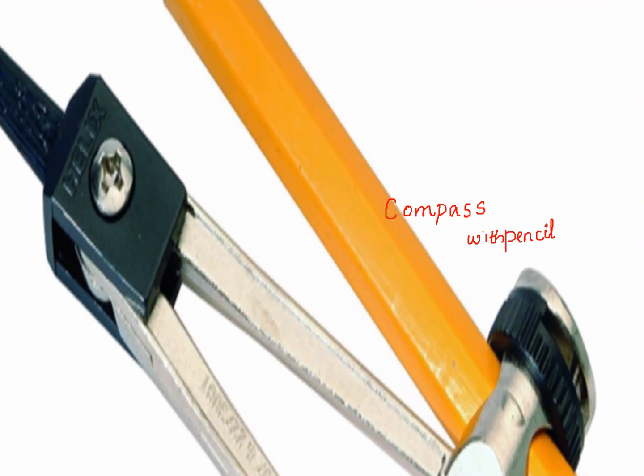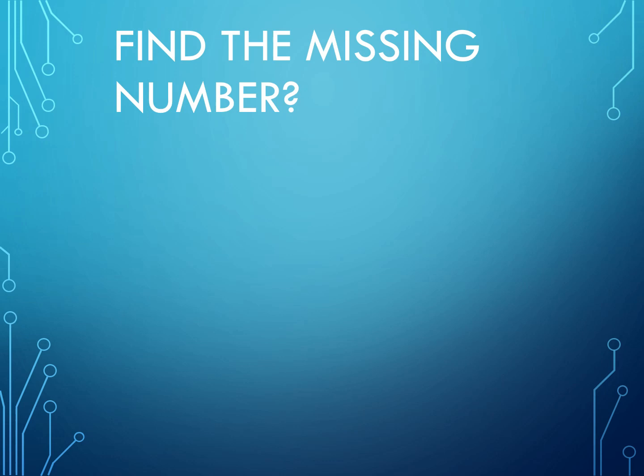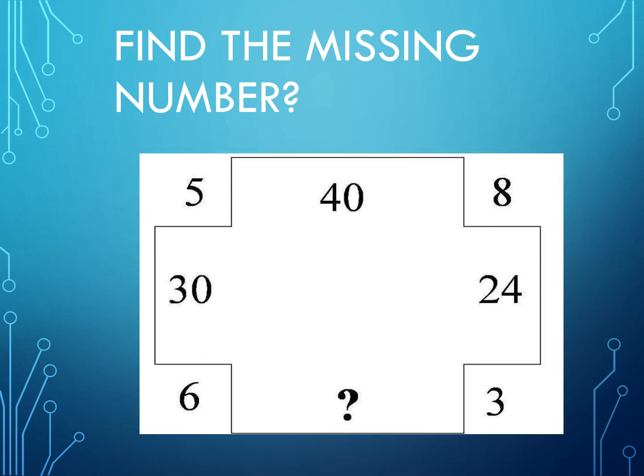Next question: find the missing number. First we will check the given numbers and what is the possibility of writing the numbers, how they're written. Here I quickly noticed that 5 times 8 is 40, 5 times 6 is 30, 8 times 3 equals 24. So 6 times 3, this answer is 18.